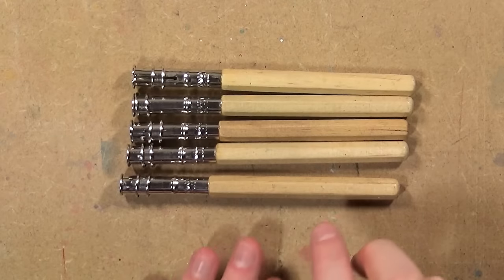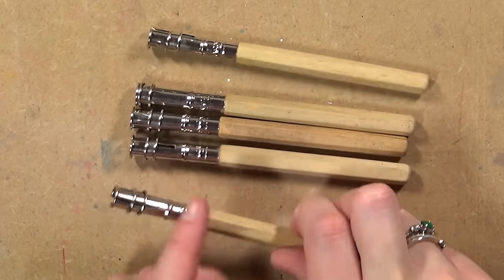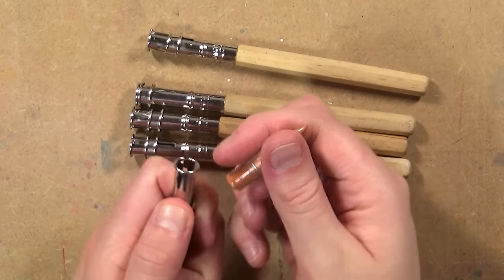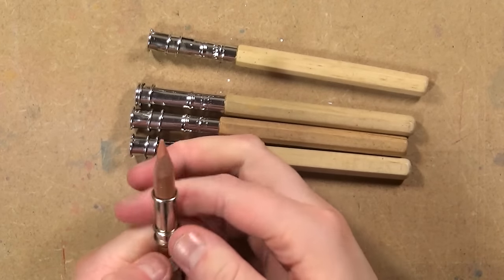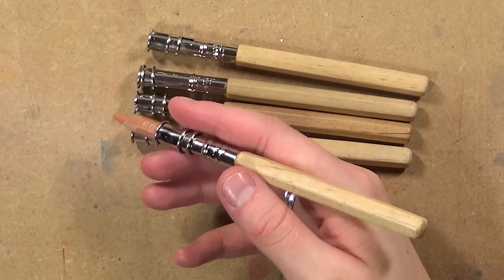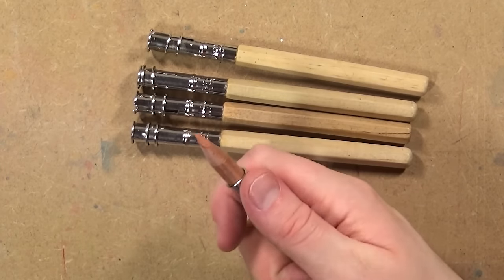When my colored pencils get a bit too small I like to use something called pencil extenders. I just got these ones from Amazon, they're not any particular brand. What you do is you put the colored pencil in the top and you just tighten it up and then it's a lot easier to draw with them. To remove the colored pencil you just untighten it and pull it out and then you can put another one in there if you need to.